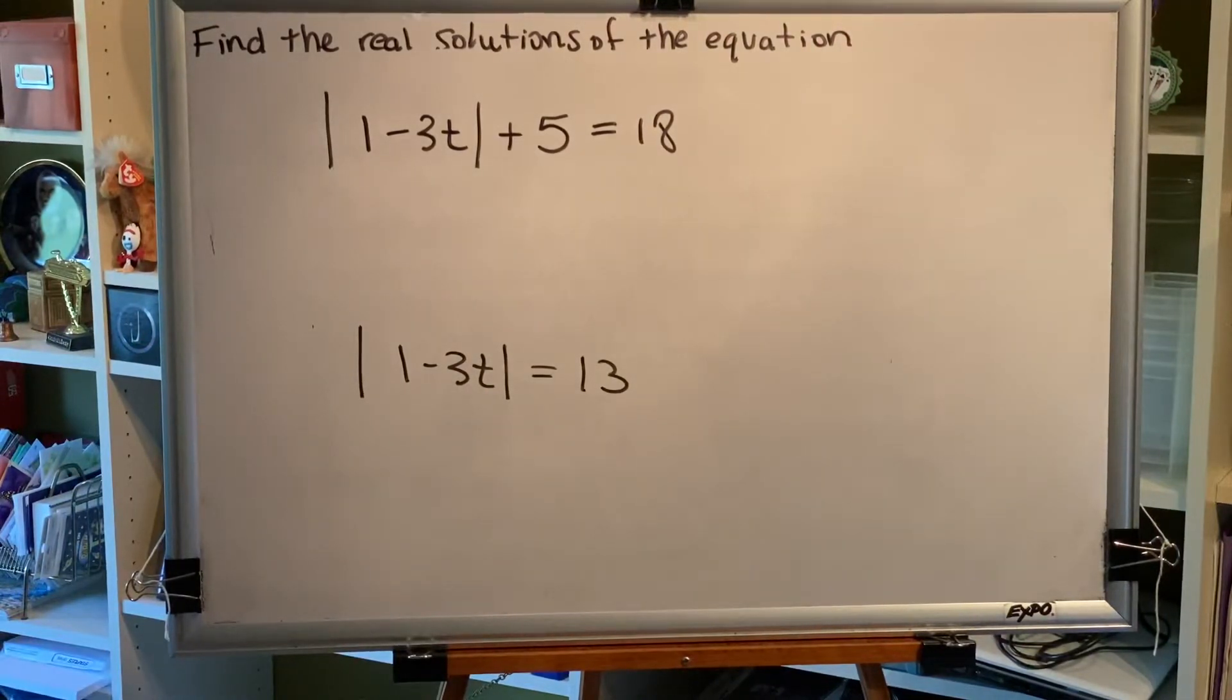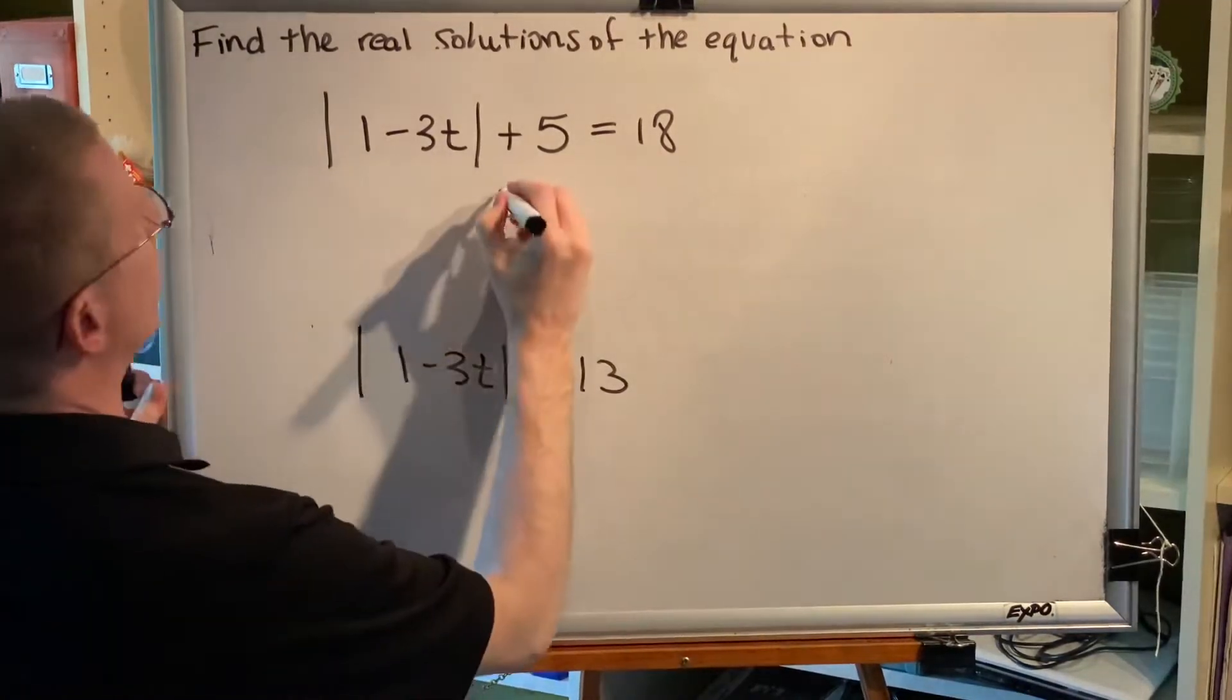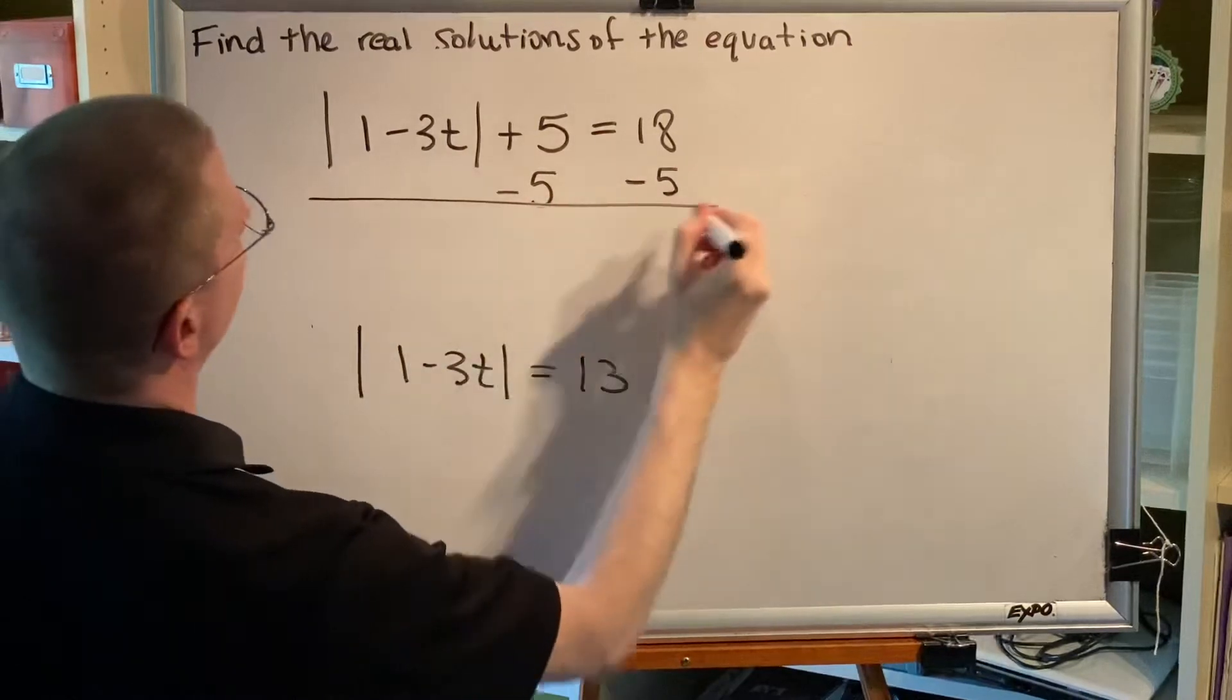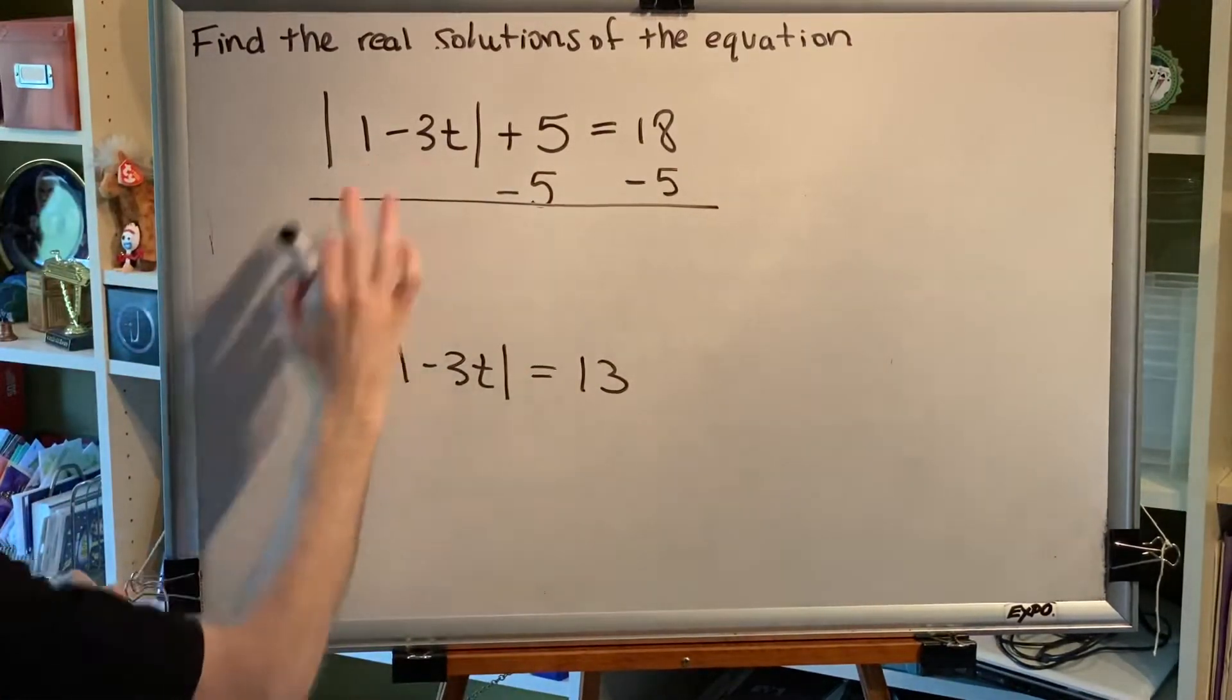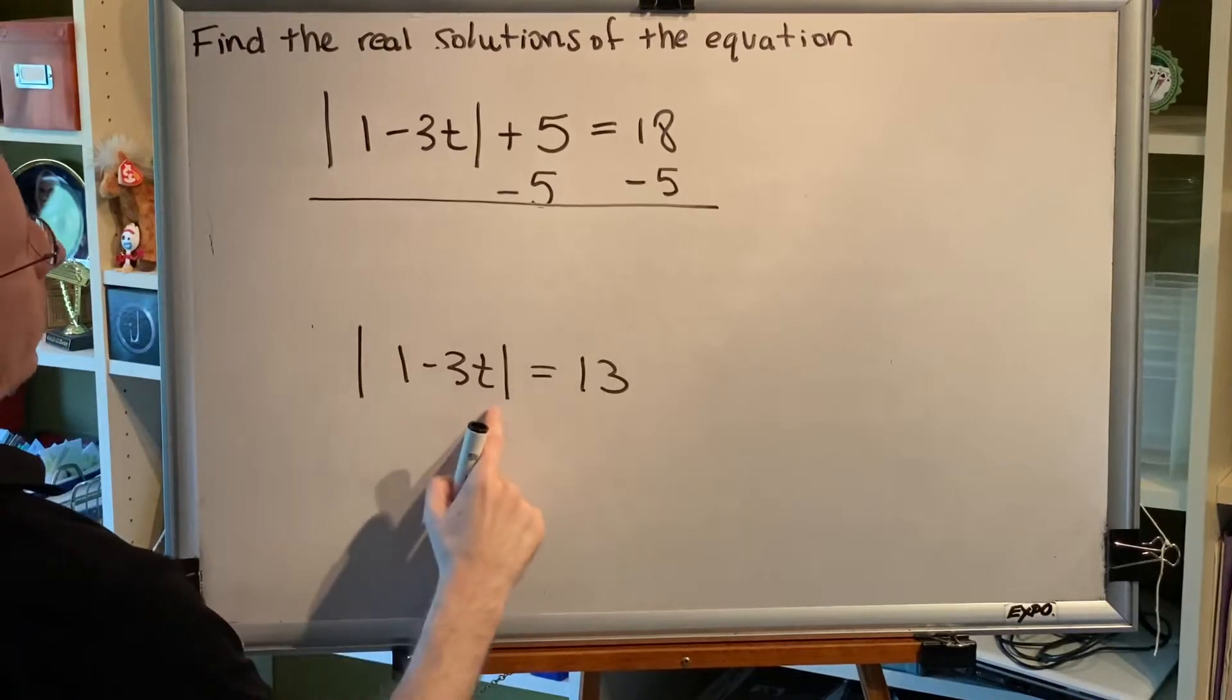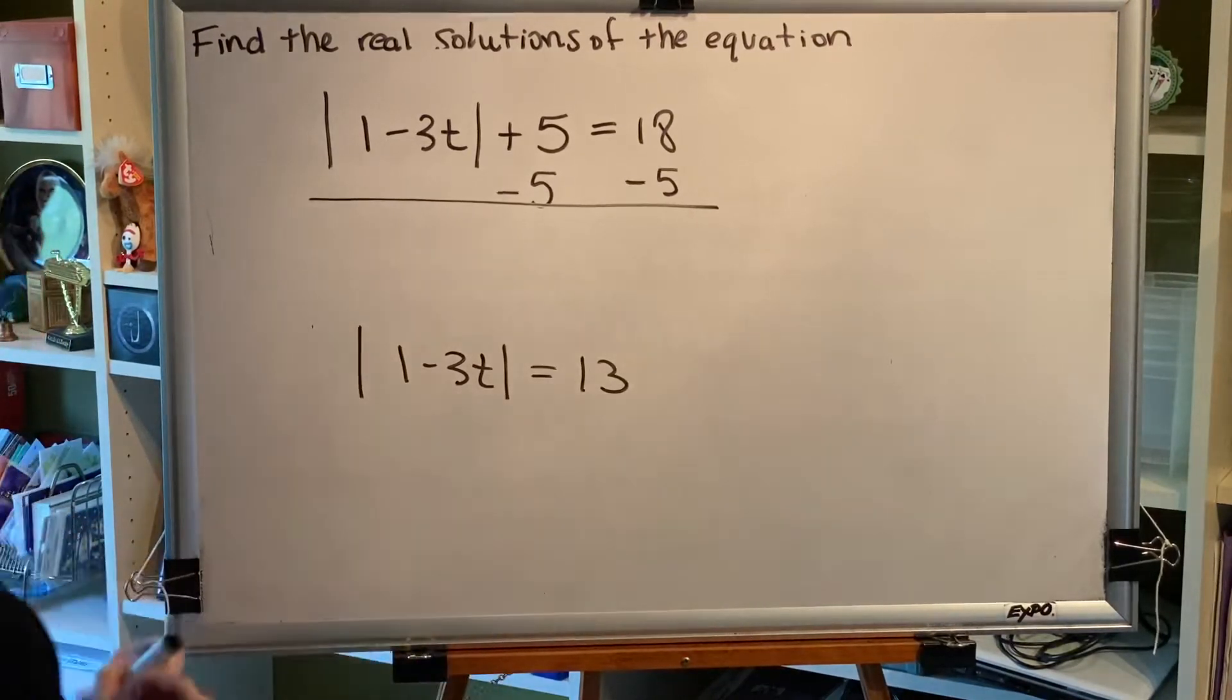Alright, now, if you're not sure how to get here in your head, you can always follow the steps, which is to say subtract 5 on both sides. The intent of doing that is to get the absolute value bars isolated. So, we're left with the absolute value of 1 minus 3t equals 13.